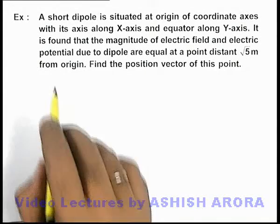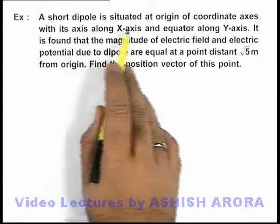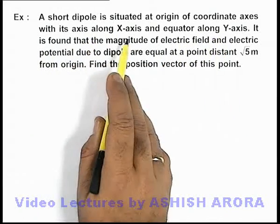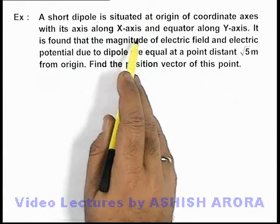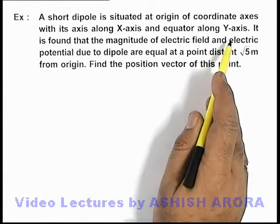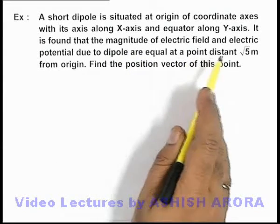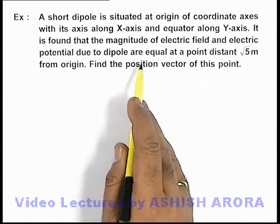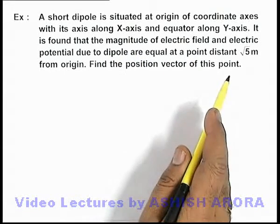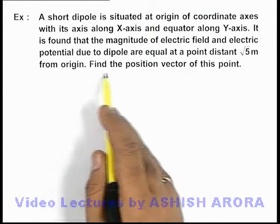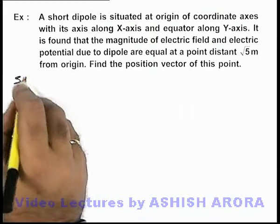In this example, we are given that a short dipole is situated at the origin of a coordinate axis with its axis along the x-axis and equator along the y-axis. It is found that the magnitude of electric field and electric potential due to the dipole are equal at a point distant √5 meters from the origin. We are required to find the position vector of this point.